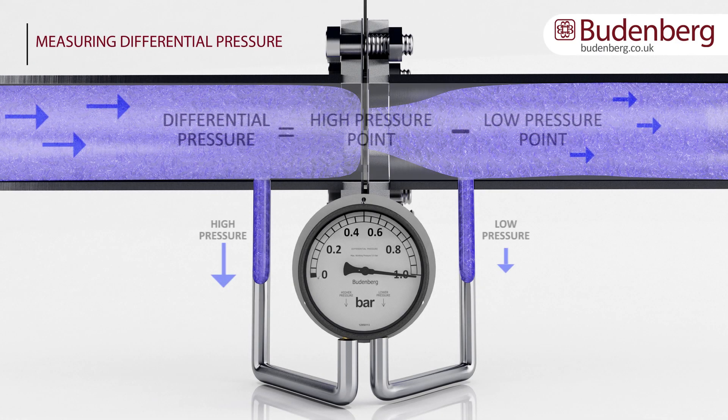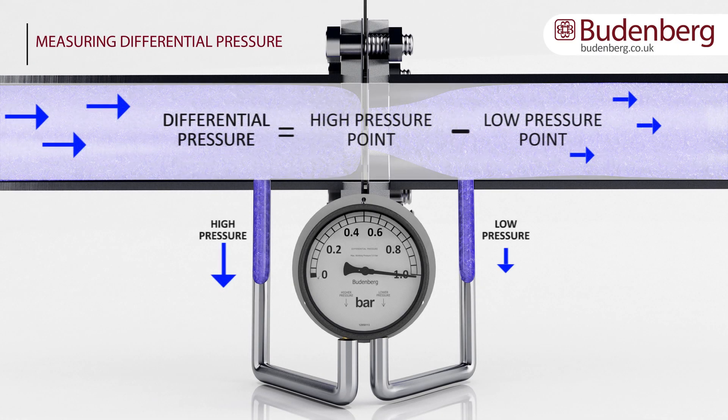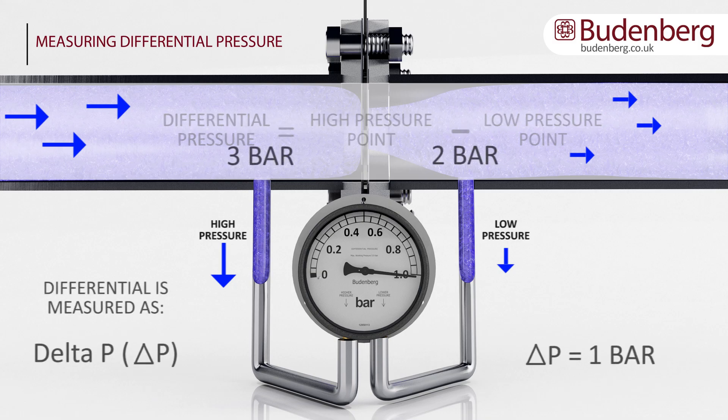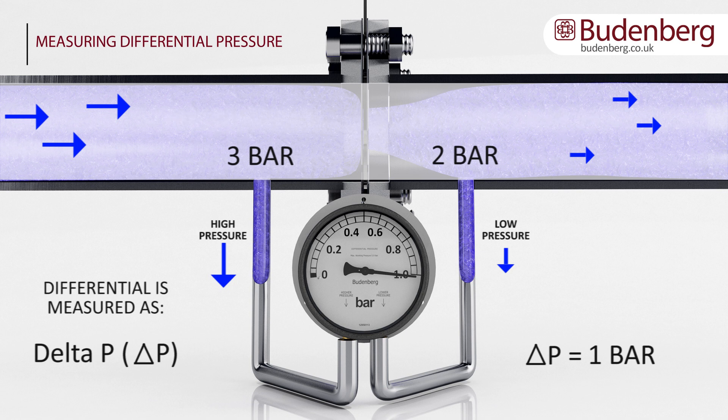Differential is the high pressure point minus the low pressure point and is measured as delta P. For example, if the high pressure point is 3 bar and the low pressure point is 2 bar, the delta P would be 1 bar.